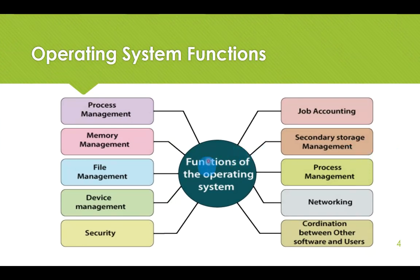These are the basic functions of an operating system. First one is process management. Process management means all the programs which are executing, being executed, or ready to execute are to be managed accordingly. This is the basic function of an operating system — to manage all the processes in a computer, for example, all open or running programs like Google Chrome, MS Word, VLC Media Player, or any kind of program you have opened. These should be managed to provide a faster experience.